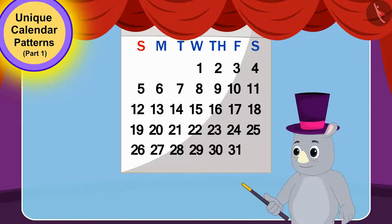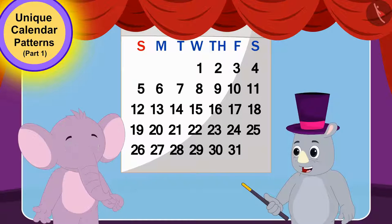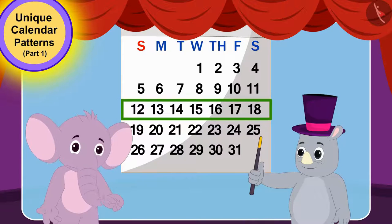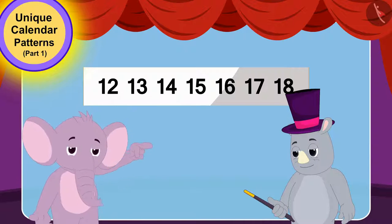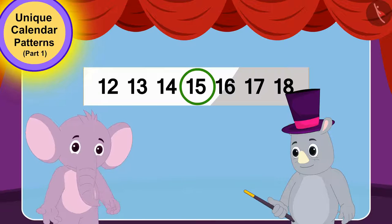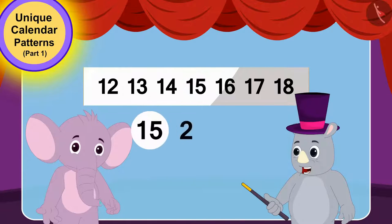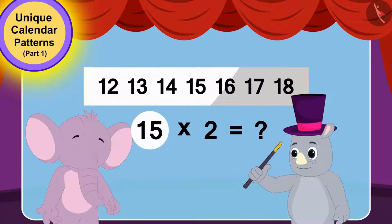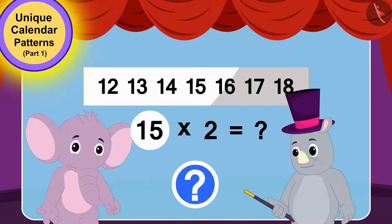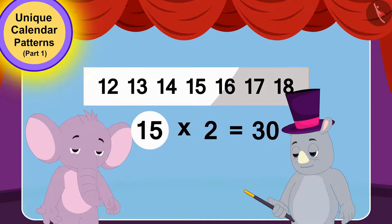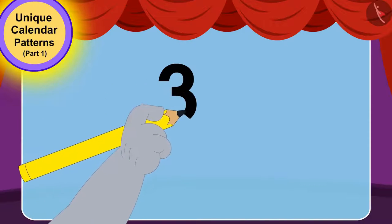Gagu asked Appu which of these numbers is exactly in the middle of this horizontal line. Appu immediately pointed to 15 and said, "This one." Gagu asked him what would be 2 times this number. Can you tell how much is 15 times 2? It's 30. Gagu wrote 30 on the paper.